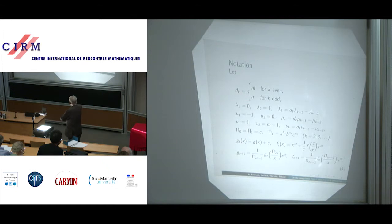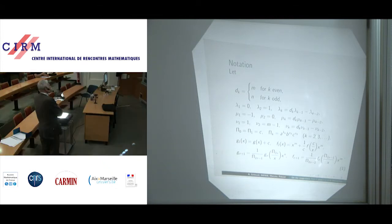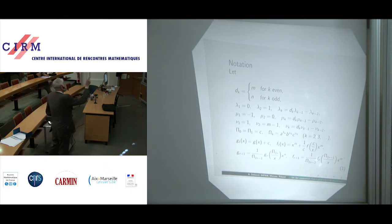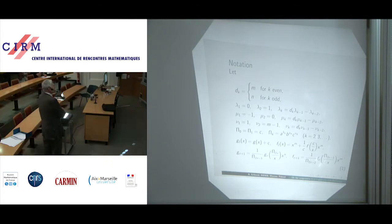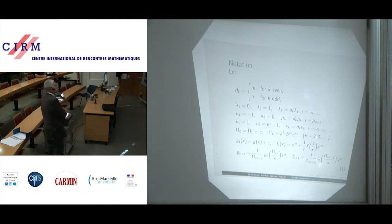And Pi_0 and Pi_1 are c — Pi here denotes a big Greek letter Pi. Pi_0 and Pi_1 equal c, and Pi_k equals a to the lambda_k times b to the mu_k times c to the nu_k for k greater than or equal to 2.